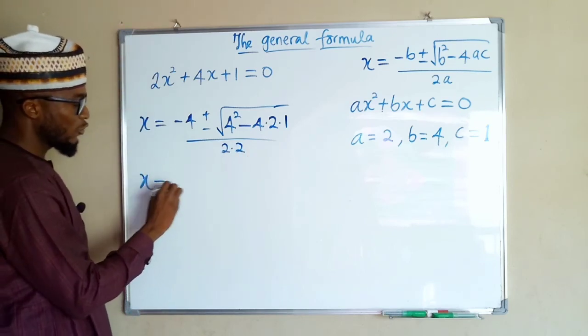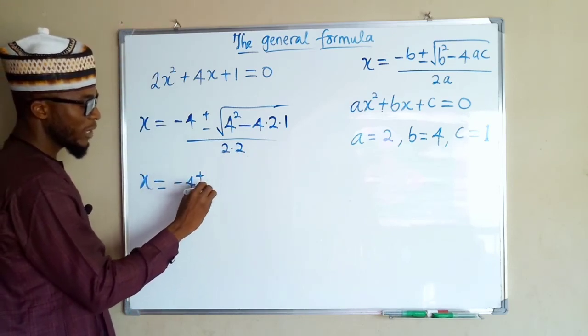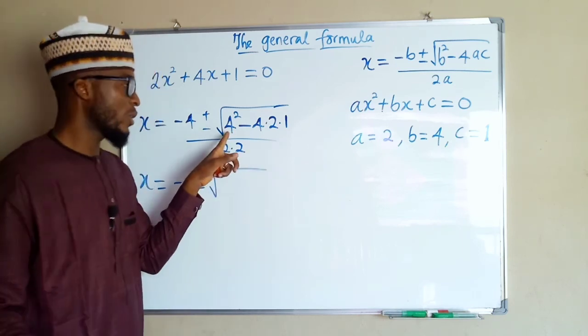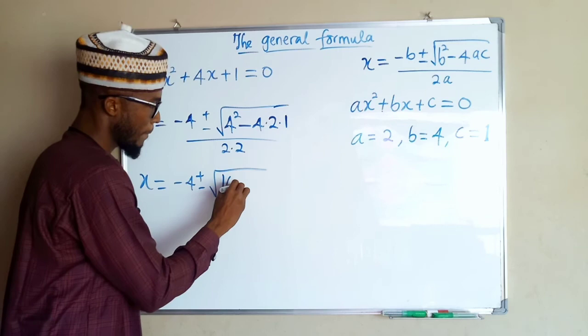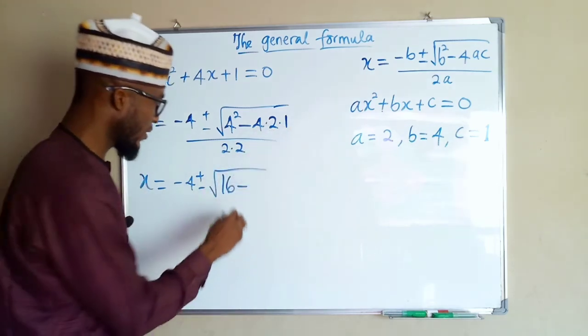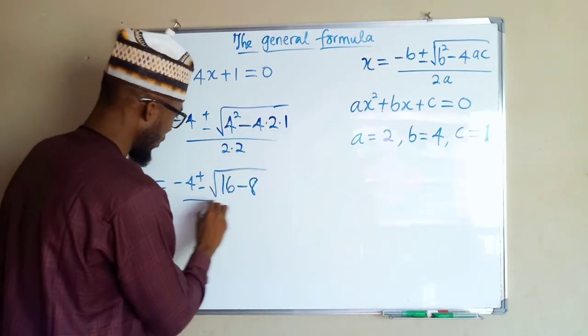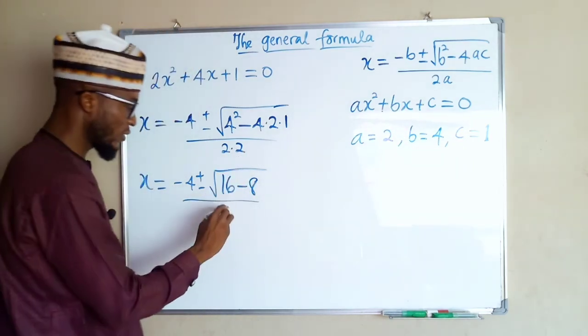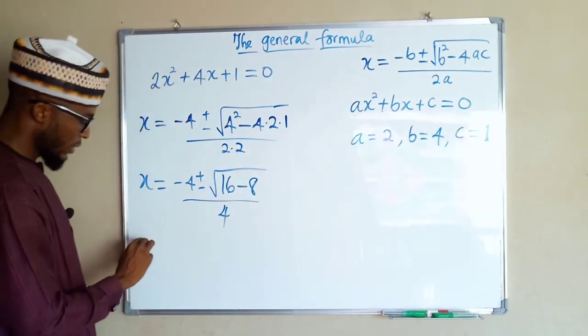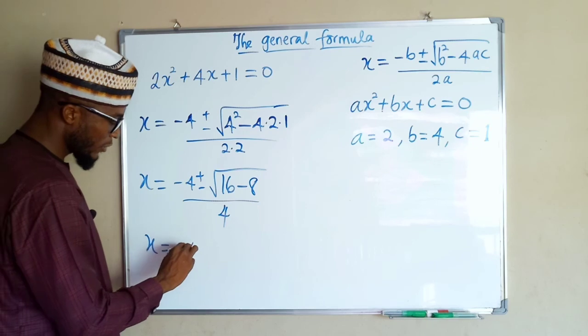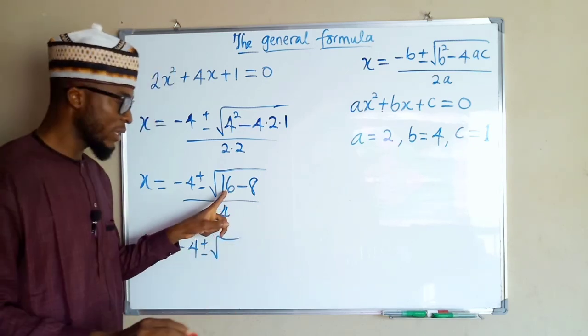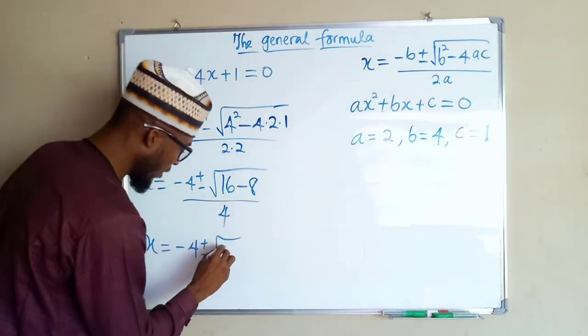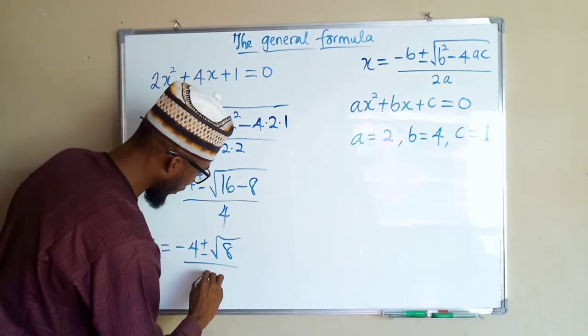x is equal to minus 4 plus or minus square root of 16 minus 8, divided by 2 times 2 is 4. x equals minus 4 plus or minus square root of 16 minus 8 is 8, divided by 4.